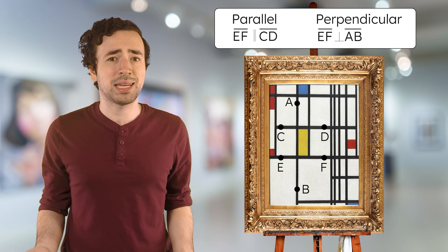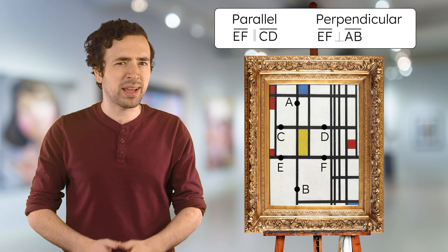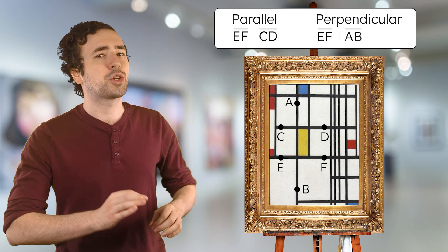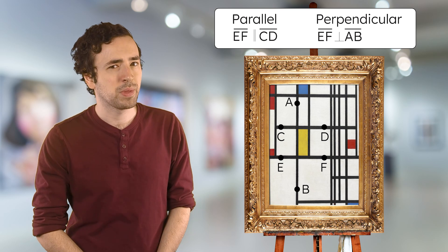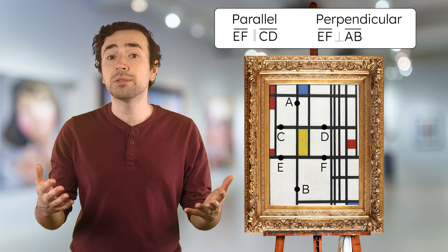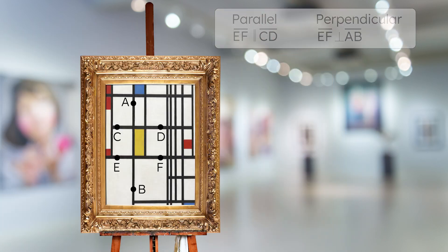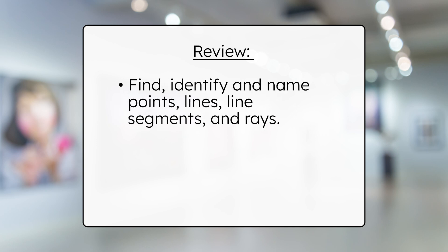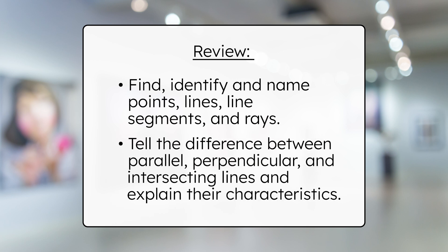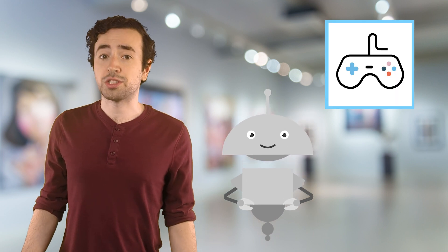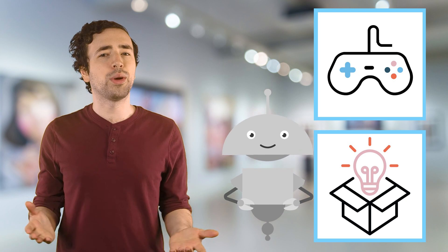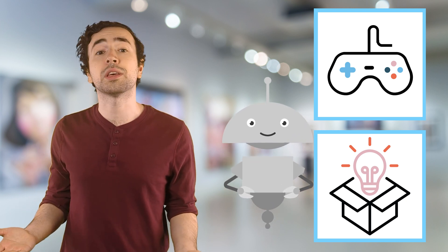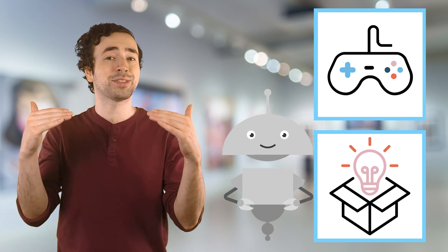Piet Mondrian wasn't just randomly painting — he was using math. Every line, every intersection was carefully placed to create this bold design. So what did we learn today, besides the fact that art is everywhere, even in math? Now you know how to find, identify, and name points, lines, line segments, and rays. You can also tell the difference between parallel, perpendicular, and intersecting lines, and explain their characteristics. Be sure to complete the practice questions and extension activities that go with this lesson. And remember, mathematicians, in math, as in life, every effort adds to your success. I'll see you next time!